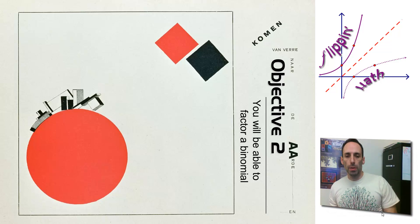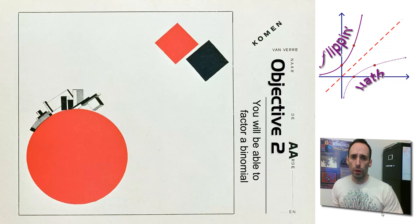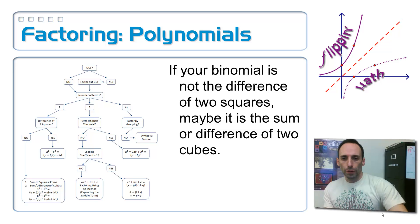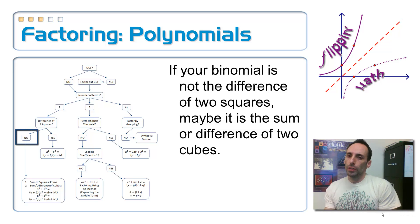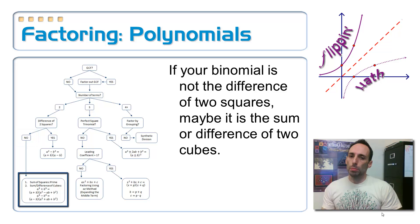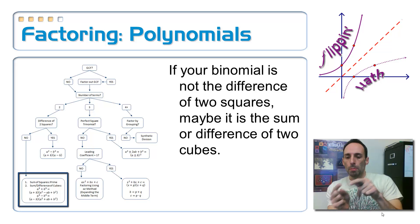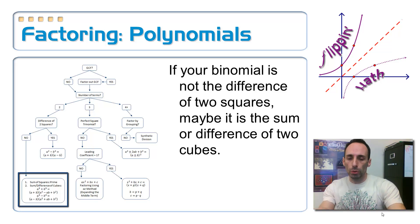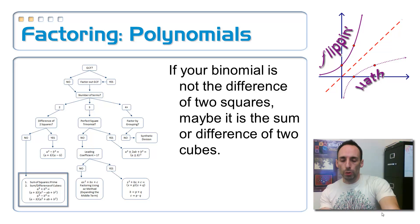We have been factoring some binomials. So far we answered yes to the question: is it the difference of two squares? If the answer is no, there is no such thing as the sum of two squares, but there is such a thing as the sum or the difference of cubes. Both of these are based on a pattern — let's see this pattern right there on your flow chart.